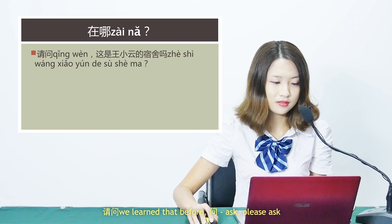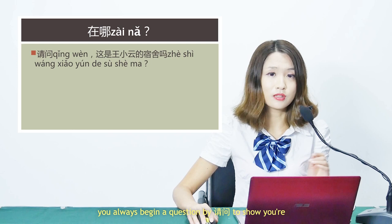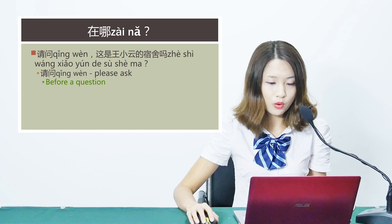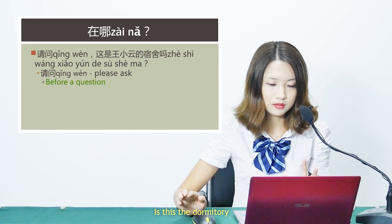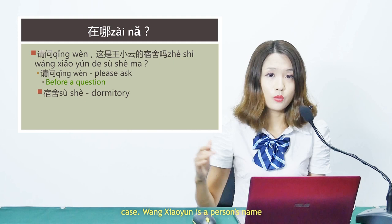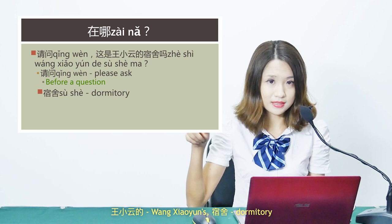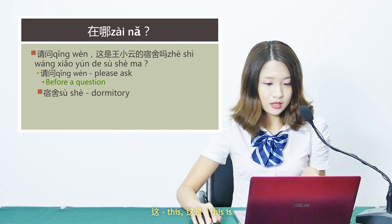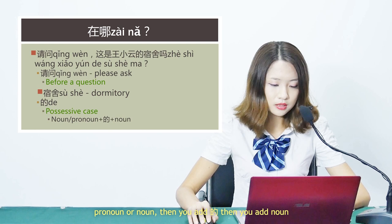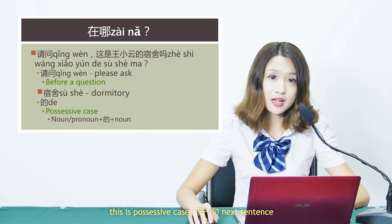我们来看第一句 — Let's see the first sentence. 请问，这是王晓云的宿舍吗? — 请问 means please ask; you always begin a question with 请问 to show politeness. 王晓云 is a person's name, and 的 is possessive — 王晓云的 means 王晓云's. 宿舍 is dormitory, 这 is this, 这是 is 'this is,' and adding 吗 makes it a yes/no question. So pronoun or noun, add 的, then add a noun — that is the possessive case.